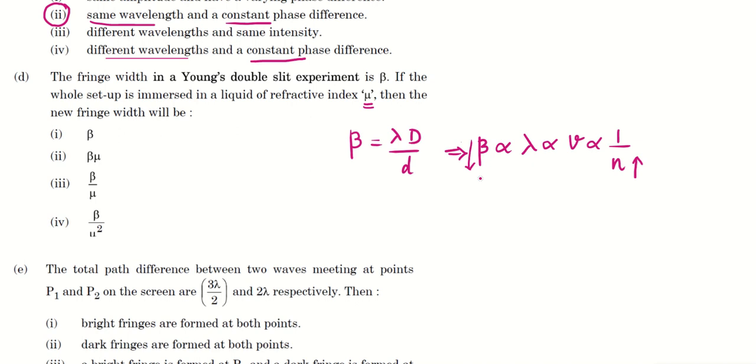So how much decrease? It is beta divided by mu. So this is the decrease in the fringe width.